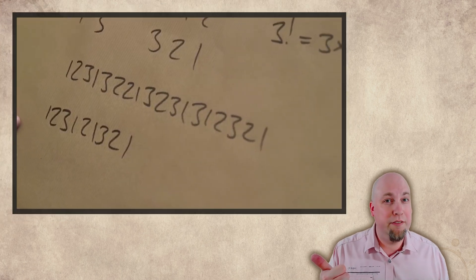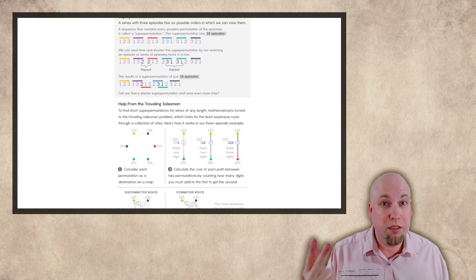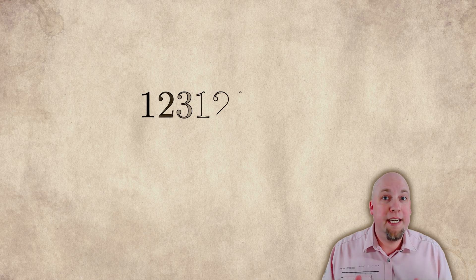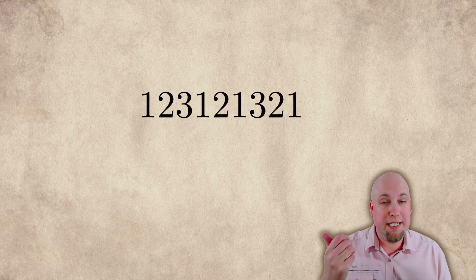Super permutations are a well-worn topic at this point. Numberphile's done a video about them, Stand-Up Math's done a video about them, Quanta wrote a nice article about them. So I'm not going to go through all the details about super permutations again, but just to remind you: a super permutation is a string that contains as substrings all permutations on n symbols.